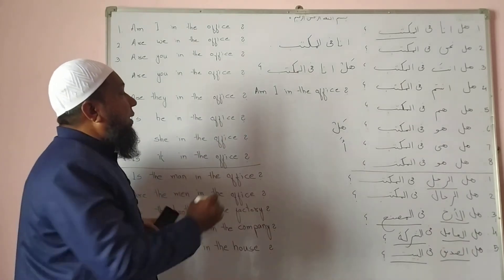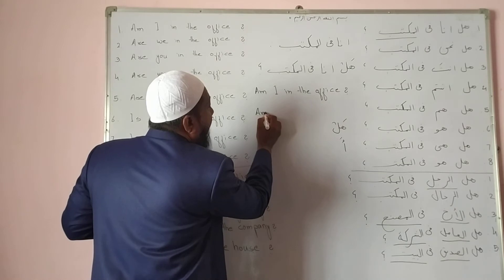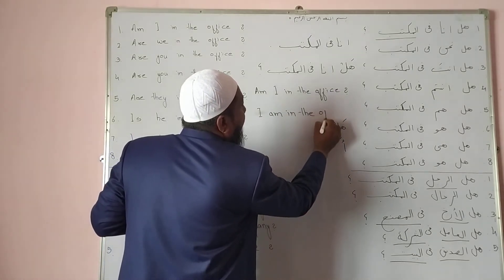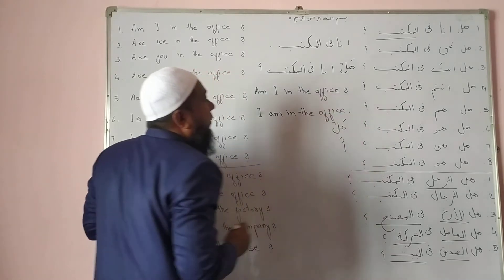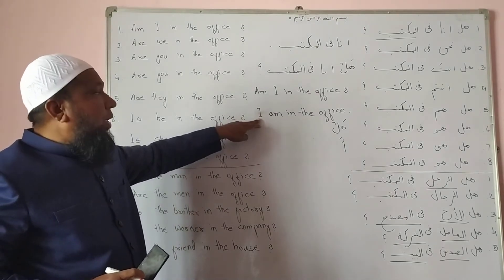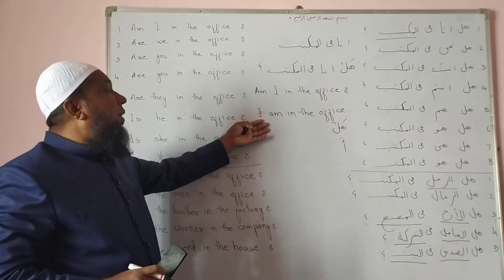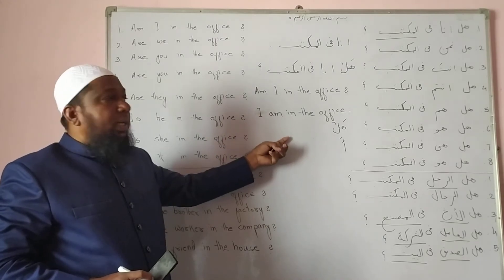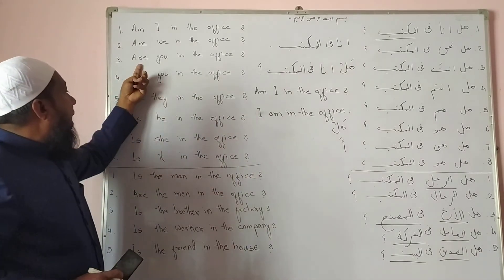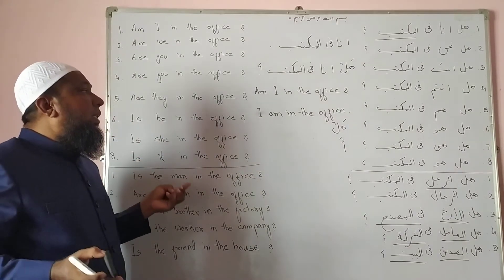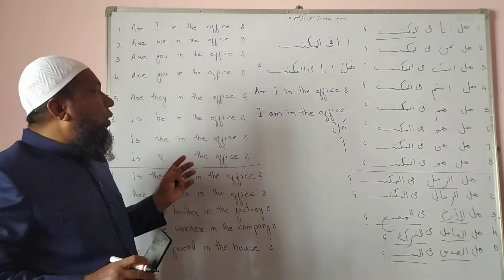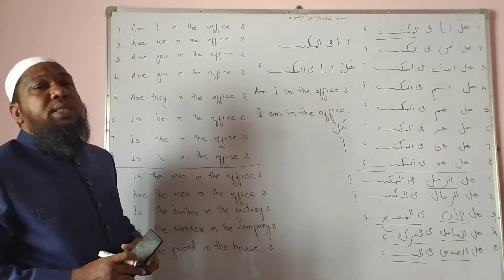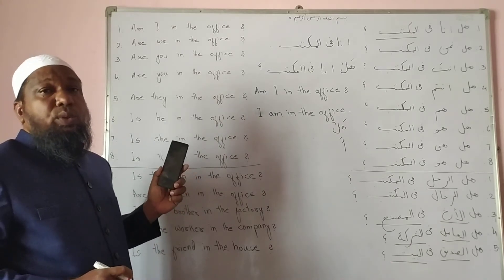So let's learn how to translate positive sentences into question sentences in English. We are practicing the 'be' form sentences. In a positive sentence we first use the helping verb, then the subject: 'I am in the office.' To change it to a question sentence in English, we bring the helping verb first, then the subject: 'Am I in the office?'